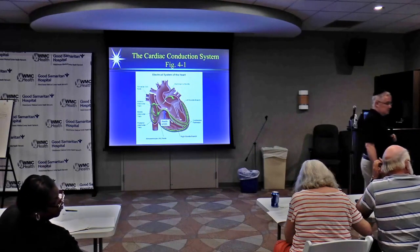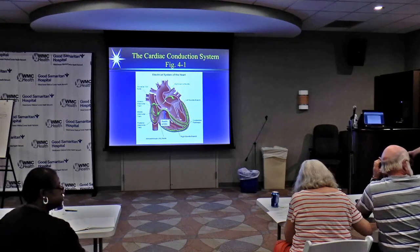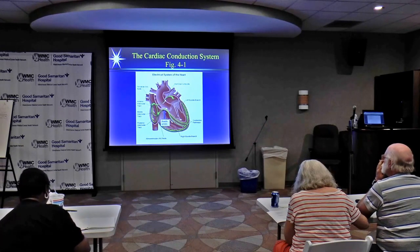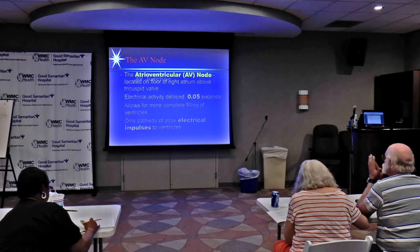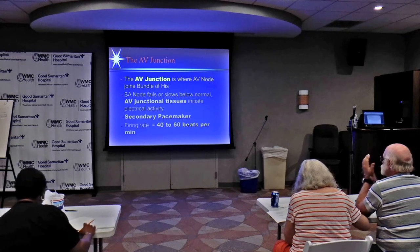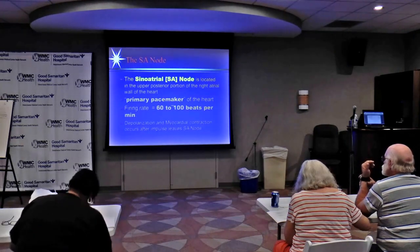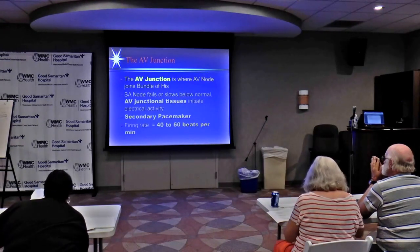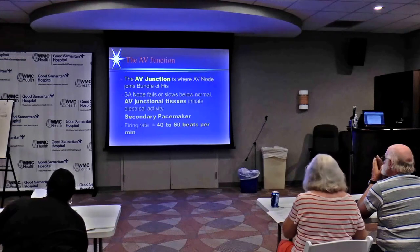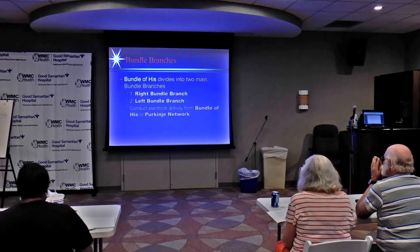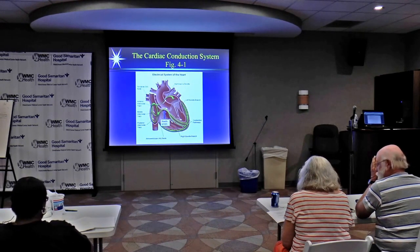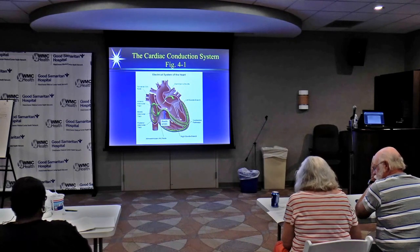A student asks if the AV node beats at 60 to 80. The SA node is 60 to 100 — that's the dominant one. If that fails, the AV junction, which is right below the AV node, fires at 40 to 60. And if that fails, it goes down into the ventricles, which fire at 20 to 40. So: 60 to 100, 40 to 60, 20 to 40.